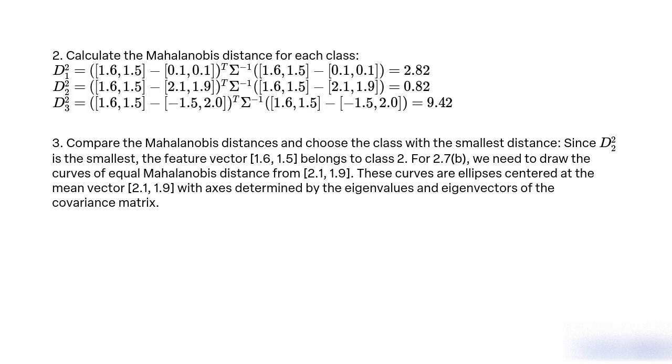we need to draw the curves of equal Mahalanobis distance from [2.1, 1.9]. These curves are ellipses centered at the mean vector [2.1, 1.9] with axes determined by the eigenvalues and eigenvectors of the covariance matrix.